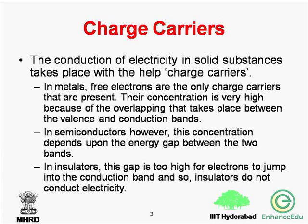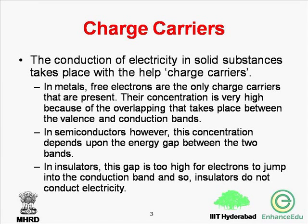In substances, electricity is conducted with the help of charge carriers — these are nothing but free electrons which move and transfer electric charge from one place to another, from lower potential to higher potential. At zero Kelvin, no thermal energy is present, so electrons remain in the valence band. As temperature increases, electrons gain sufficient kinetic energy to cross the energy gap between the valence band and the conduction band.